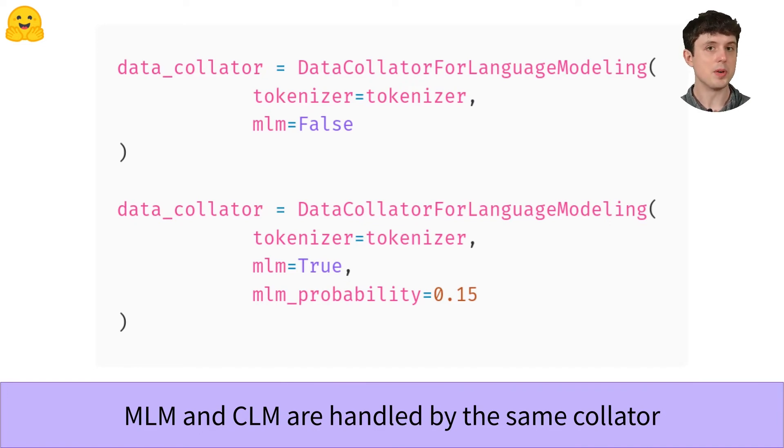So you choose which mode you want with the mlm argument. Set it to true for masked language modeling and set it to false for causal language modeling.